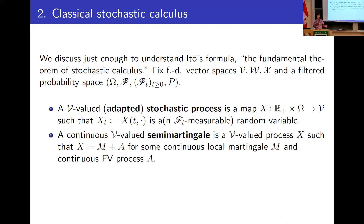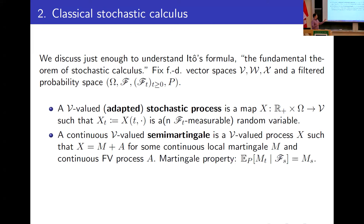The most fundamental object in stochastic calculus is called a semi-martingale. A continuous V-valued semi-martingale is a V-valued stochastic process that admits a decomposition M plus A, where M is some continuous local martingale and A is some continuous finite variation (FV) process, meaning the paths of A have locally bounded variation almost surely. The martingale property defines what a martingale is.